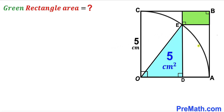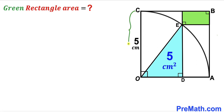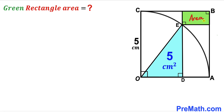Welcome to pre-math. In this video we have a quarter circle with the center fully inscribed in a square OABC, such that a green shaded rectangle is fully confined between the square and the quarter circle. The radius of this quarter circle is 5 centimeters, the side length of square OABC is 5 centimeters, and the area of the blue shaded right triangle ODE is 5 centimeters squared. Our task is to calculate the area of the green shaded rectangle.